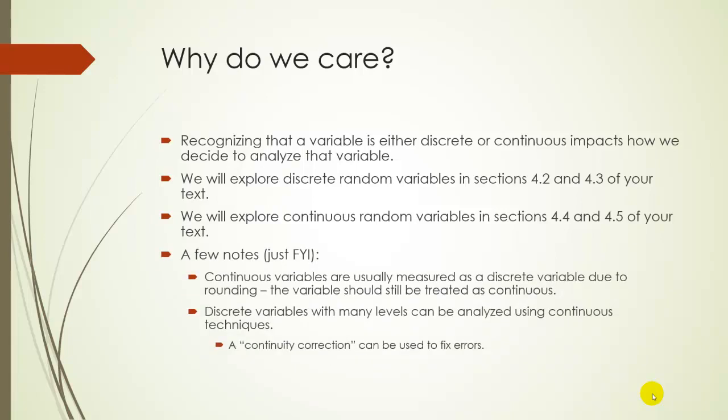And these aren't that important of notes, but just to kind of prevent any kind of confusion. Continuous variables are often measured at discrete levels, just due to rounding. For example, you might have a continuous variable like a person's height, but we might round a person's height to the nearest inch or the nearest half inch. Even though we're rounding it, and so essentially we're treating it like it really is discrete since it is rounded. Since the actual variable was continuous, we'll treat it like it's continuous when we analyze it. And that's not a big deal. Don't worry about it too much.